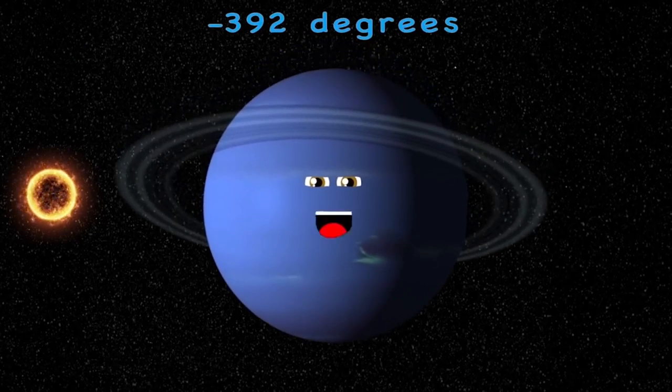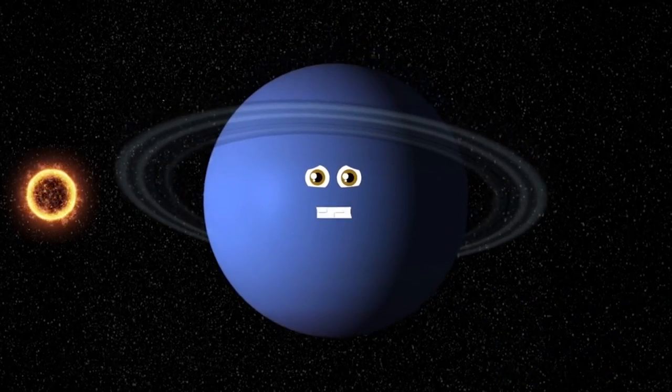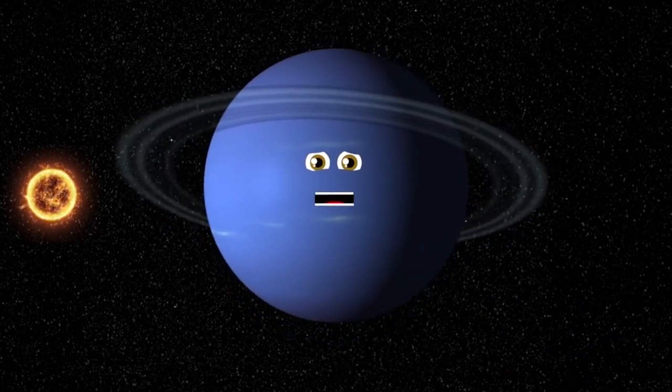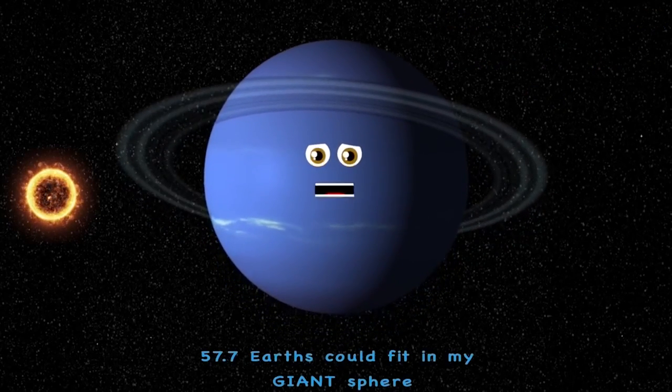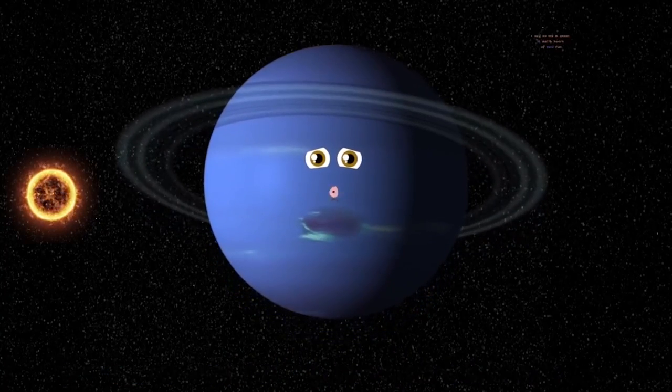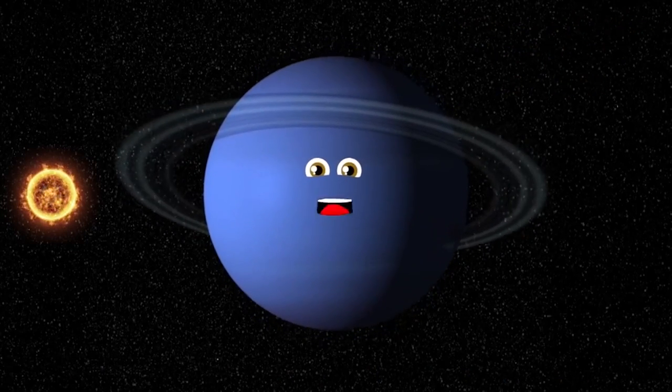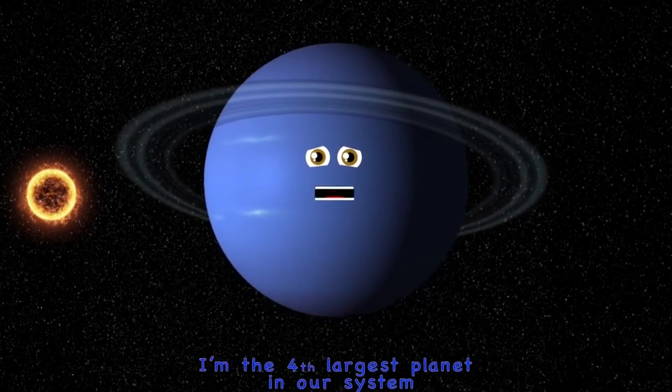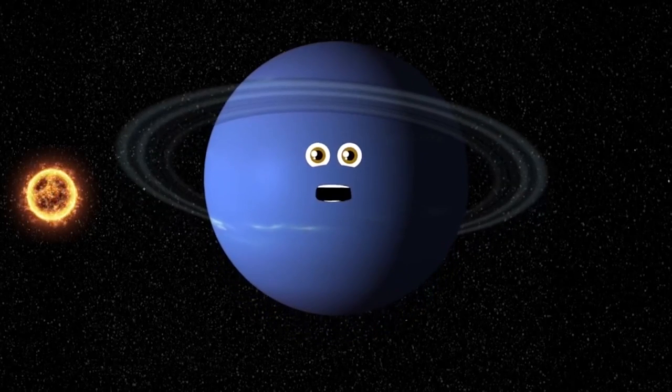Minus 392 degrees an average day on me, and my winds are the strongest than any planet in our system. About 165 Earth years makes one Neptunian year. 57.7 Earths could fit in my giant sphere. 2.8 billion miles is my distance from our sun. One day on me is about 16 Earth hours of cold fun. No life as we know it could survive on me. I'm the fourth largest planet in our system, you'd have to agree.